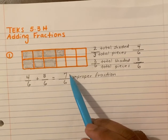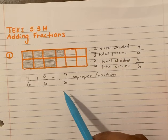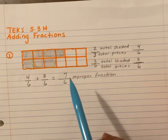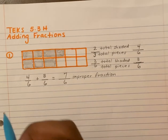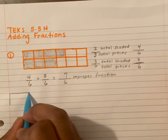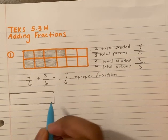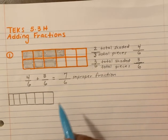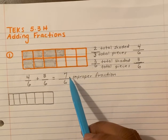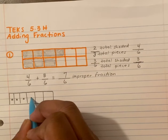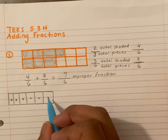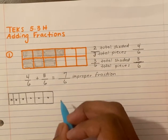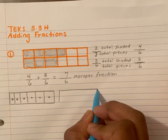We know this as an improper fraction. It's improper because the numerator is larger than the denominator, but we have to change this — we cannot leave it like this. Here's how we change it: I'm going to create a picture of six pieces. I'll draw six pieces — one, two, three, four, five, and six. Now I'm going to shade in seven of those pieces: one, two, three, four, five, six — well, I only got to six, I need to do seven.